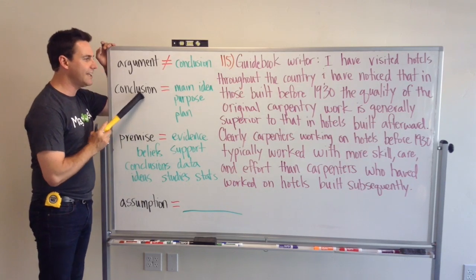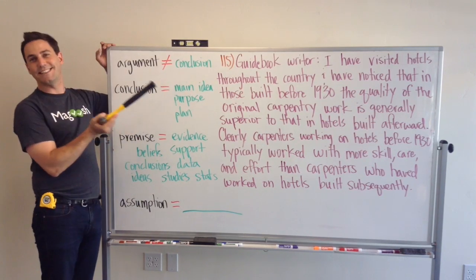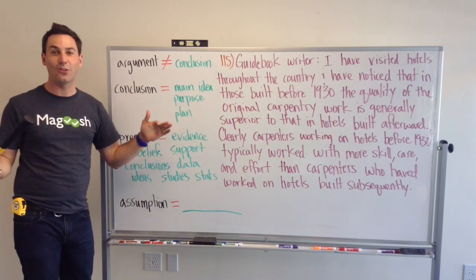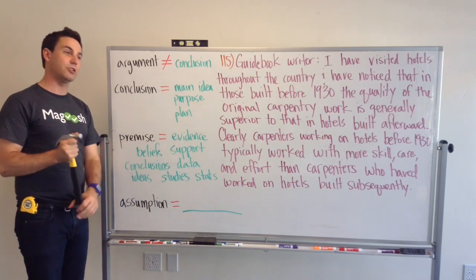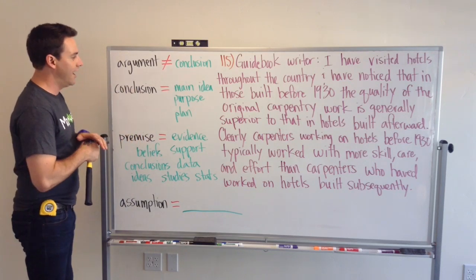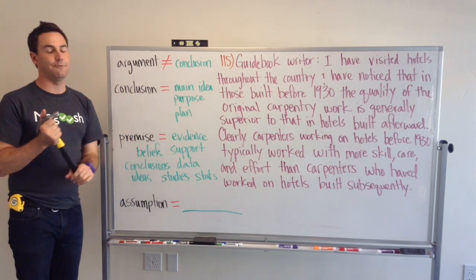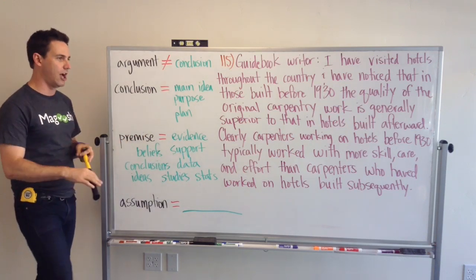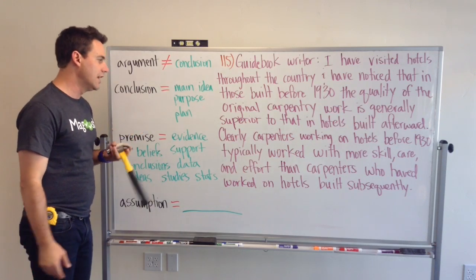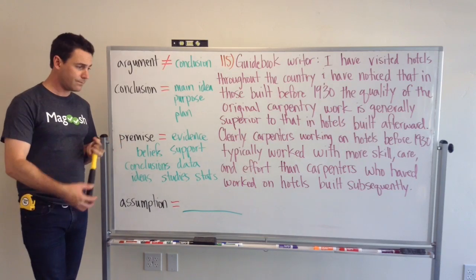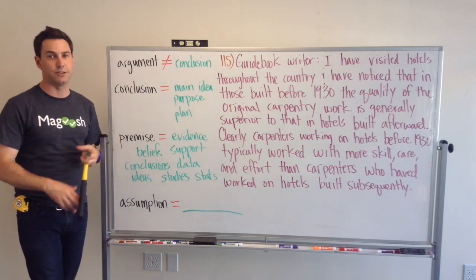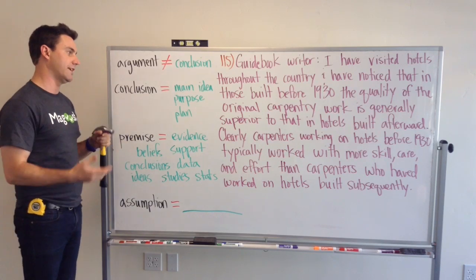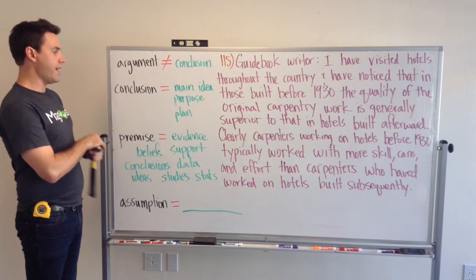The conclusion is the main idea. It's the purpose, it's the plan, it's the thing that the author wants you to believe — it's what you're being convinced of. In the realm of critical reasoning and formal arguments, the conclusion is what everything builds towards. It's the purpose of the entire argument and it's what you're being convinced of.